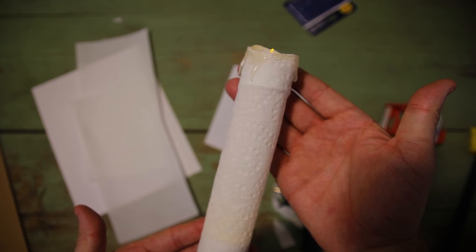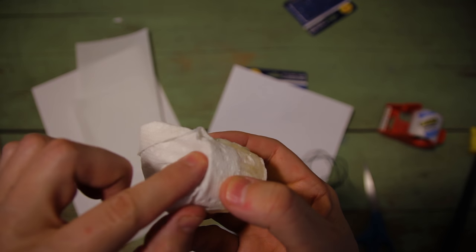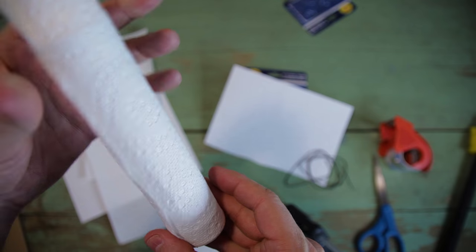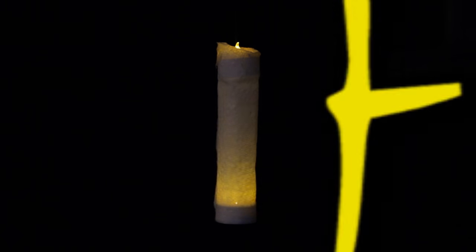The paper towel version gives you a great texture effect for the candle. To turn on that top candle, you can just fold the paper towel over and click the switch through the soft paper. The paper towel version is a little flimsy when you're handling it, but when it's hanging from the ceiling, it'll look like a solid candle.